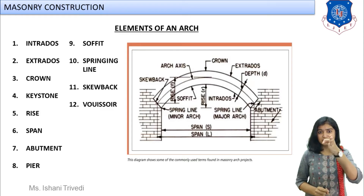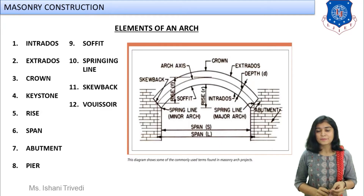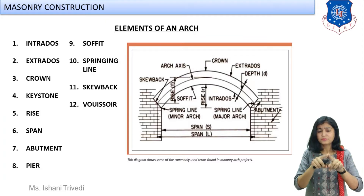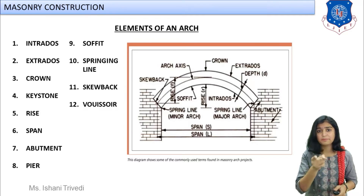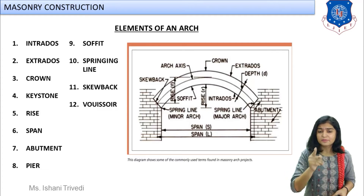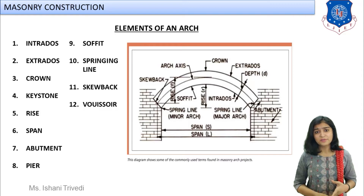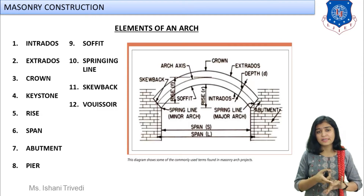The outer curvature of the arch is known as the extrados, and the inner curvature is known as the intrados. The last voussoirs on both sides resting on the supports are called keystones.